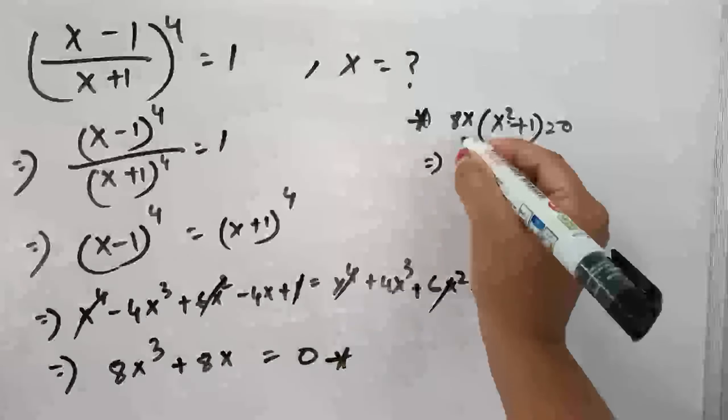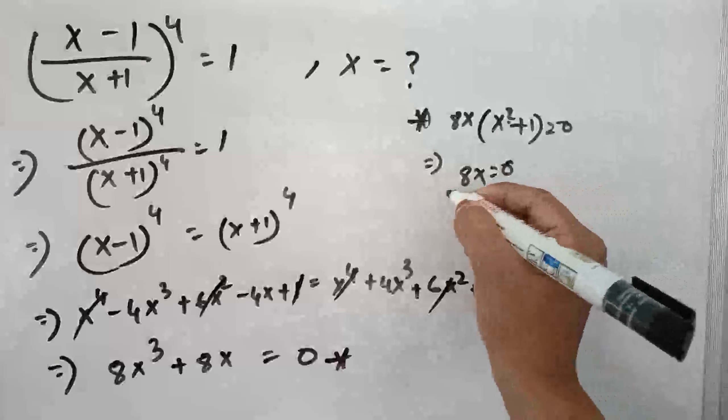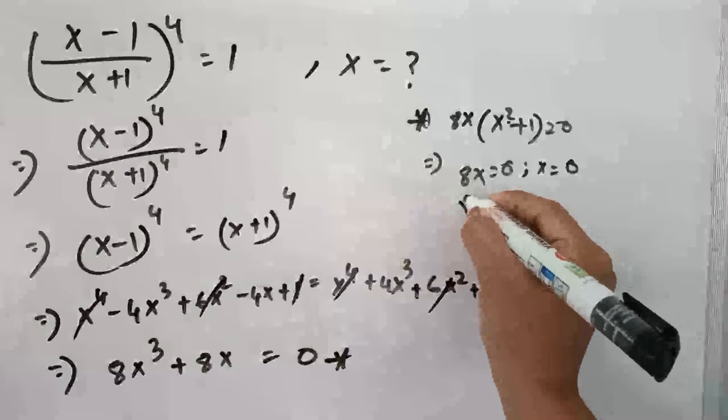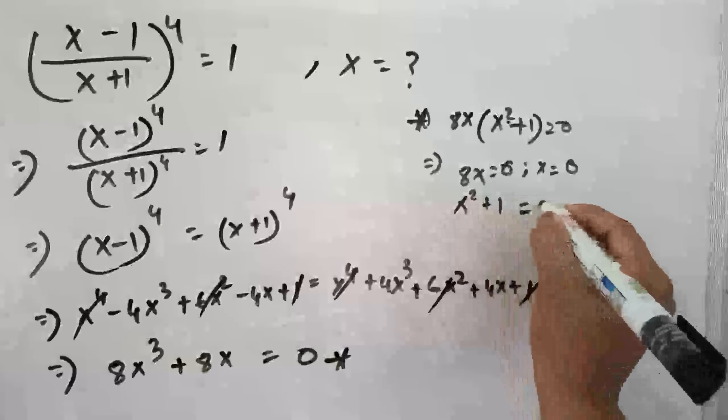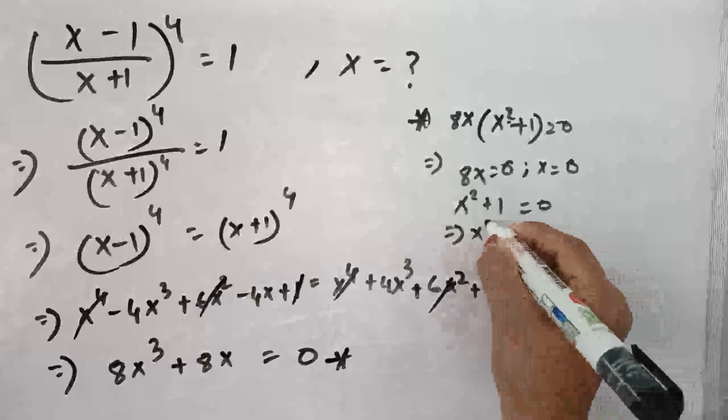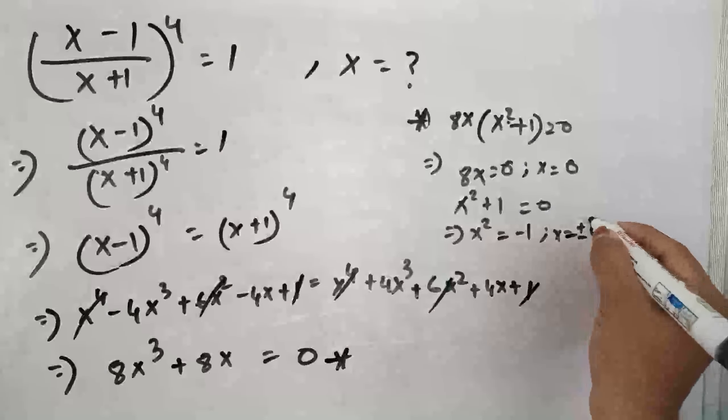Therefore, we can say either 8 x equals to 0 so x equals to 0 or x square plus 1 equals to 0 therefore we can say x square equals to minus 1 so x equals to plus minus i.